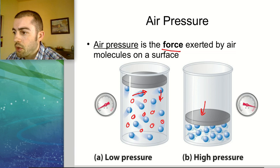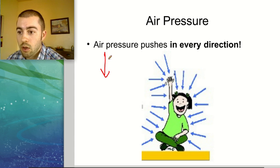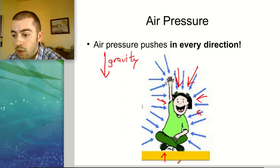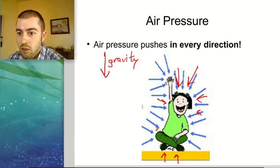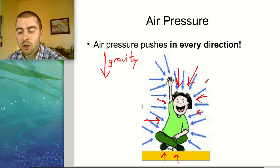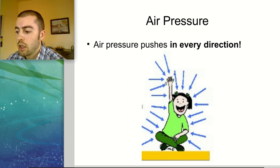One important thing to know about air pressure is that it pushes in every direction. We've talked about gravity and how gravity only pushes downwards towards the center of the Earth, but air pressure pushes in every direction — downwards and also from the sides. If it didn't, we would only have air pushing downwards or wind that went in one direction, which wouldn't really make sense.